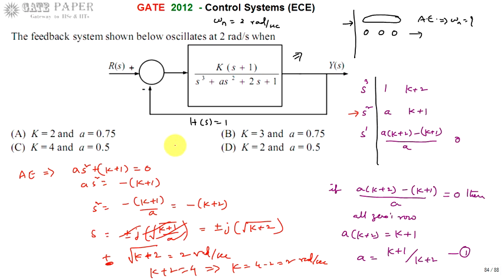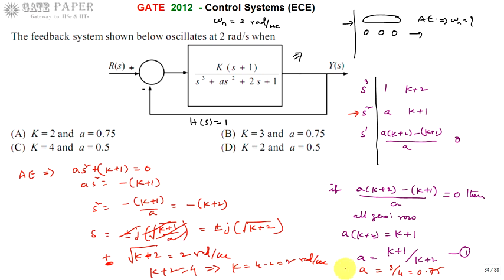With k = 2, we substitute into a = (k + 1)/(k + 2) = 3/4 = 0.75. So k = 2 and a = 0.75. The oscillation frequency is 2 radians per second as given. We consider only the positive sign since frequency is positive. Therefore, the correct answer is option A: k = 2 and a = 0.75. Thank you.